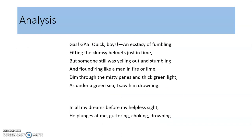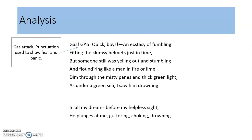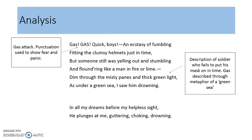Onto the next section: 'Gas! Gas! Quick, boys! — An ecstasy of fumbling, fitting the clumsy helmets just in time.' Here we have the actual gas attack. The punctuation is used to show the soldiers' fear and panic — they're stumbling and fumbling around trying to fit their gas masks before the gas gets to them. 'But someone still was yelling out and stumbling and floundering like a man in fire or lime. Dim through the misty panes and thick green light, as under a green sea, I saw him drowning.' The gas is described through the metaphor of a green sea, giving this vivid image of a soldier drowning under this sea of gas — a really terrifying description.